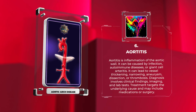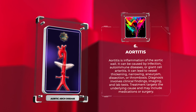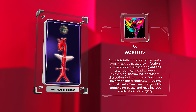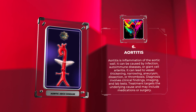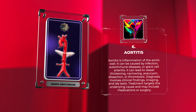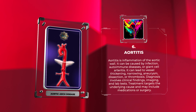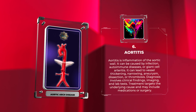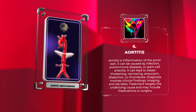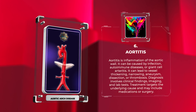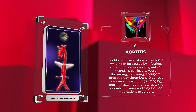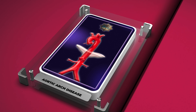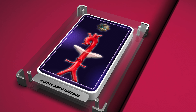Diagnosis of Takayasu arteritis involves clinical findings and imaging studies, with treatment focusing on controlling inflammation and preventing further damage. Aortitis is inflammation of the aortic wall. It can be caused by infection, autoimmune diseases, or giant cell arteritis, and can lead to vessel thickening, narrowing, aneurysm, dissection, or thrombosis.